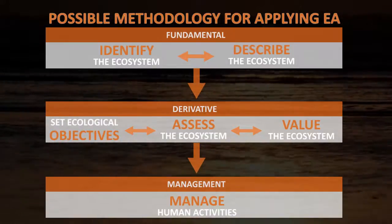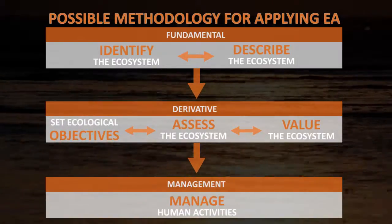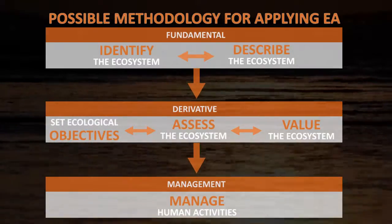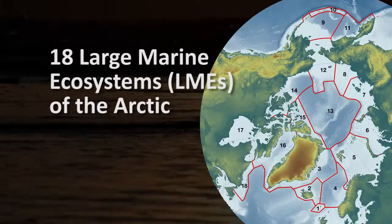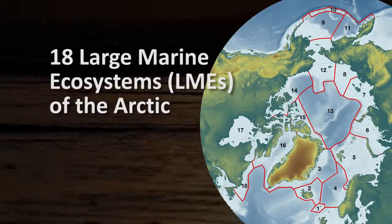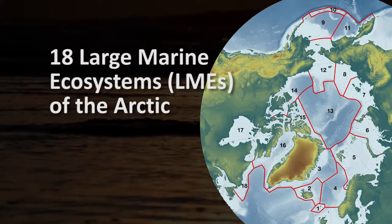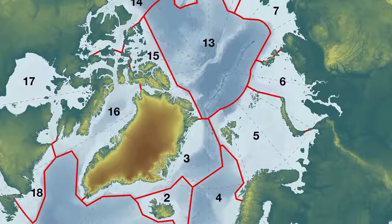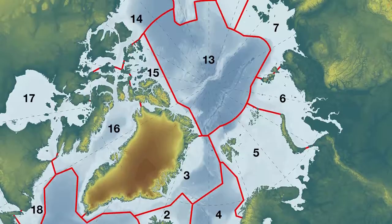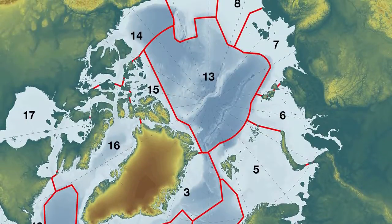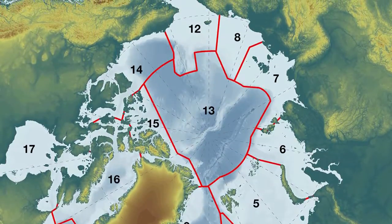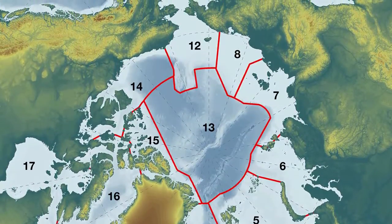Identifying the ecosystem as a geographical entity, based on ecological criteria, has seen the 18 large marine ecosystems of the Arctic defined. The Arctic LMEs are open ecosystems where exchanges between them are important system characteristics.